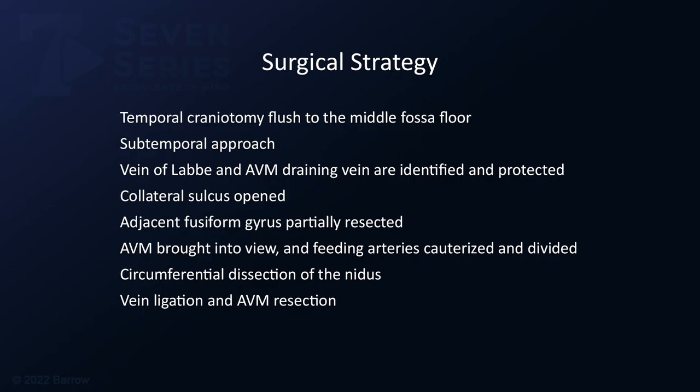Surgical strategy consisted of the following: a temporal craniotomy flushed with the middle fossa floor; a subtemporal approach; identification and protection of the vein of Labbe and the AVM draining vein; opening of the collateral sulcus; resection of some of the adjacent fusiform gyrus; identification of the AVM with cauterization of the feeding arteries; circumferential dissection of the small nidus; and ligation of the darkened vein with complete AVM resection.